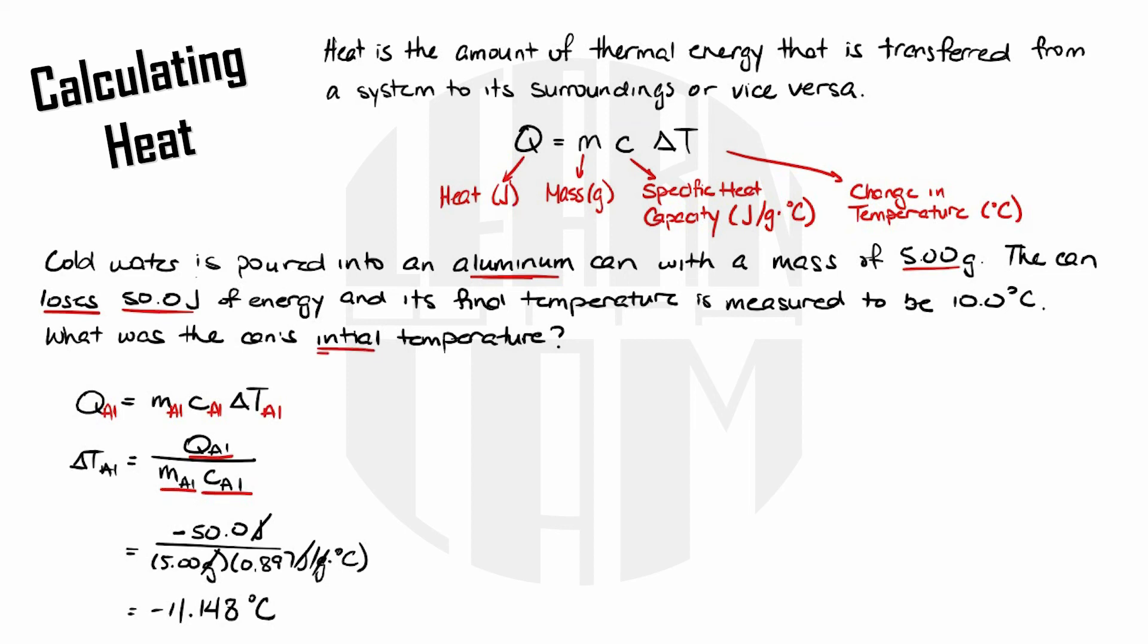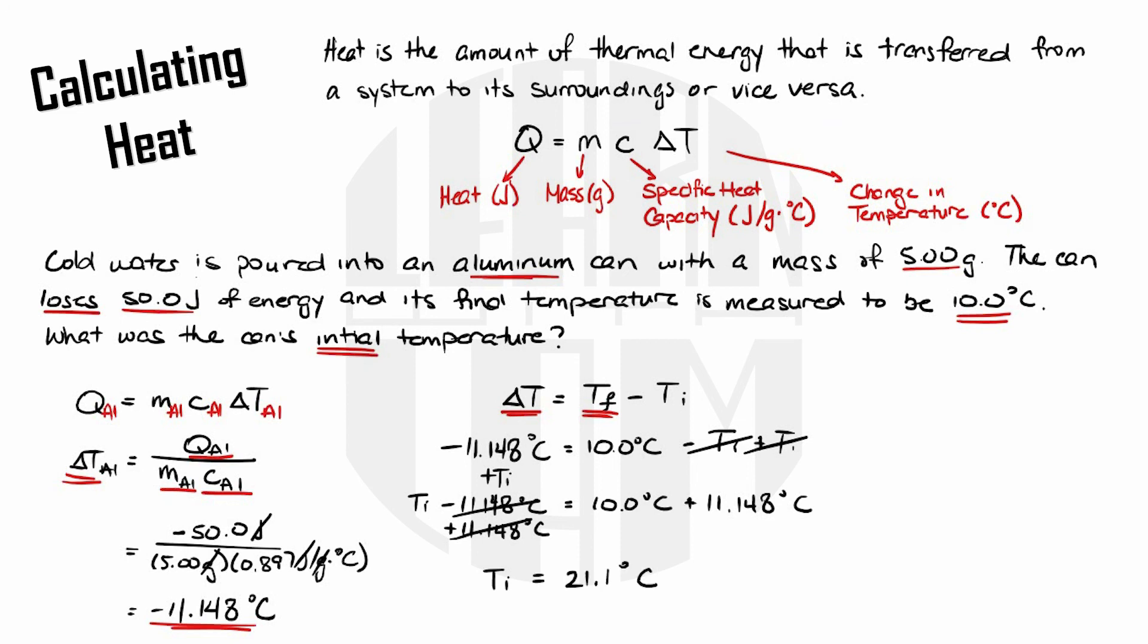But remember that we're looking for the initial temperature not the change so we're not quite done yet. Delta T equals T final minus T initial so my equation is negative 11.148 degrees Celsius equals my final temperature which is 10.0 degrees Celsius minus T initial. I'll add T initial to both sides so my T initial is positive. That gives me T initial minus 11.148 degrees Celsius equals 10.0 degrees Celsius and then I'll add 11.148 degrees Celsius to both sides to isolate for T initial. That gives me 21.1 degrees Celsius as my initial temperature.